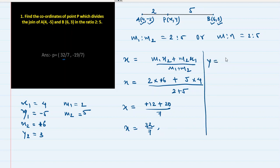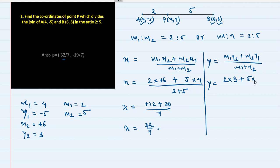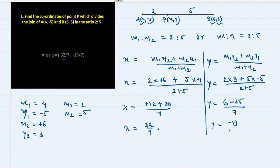For y: y = (m1·y2 + m2·y1) / (m1 + m2) = (2×3 + 5×(-5)) / (2+5) = (6 - 25) / 7 = -19/7. So the coordinates of point P are (32/7, -19/7). This is a simple application of section formula — we found the coordinates of a point dividing the line segment joining two given points in a given ratio.